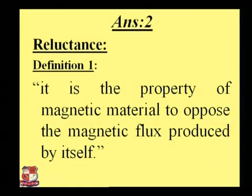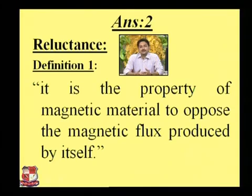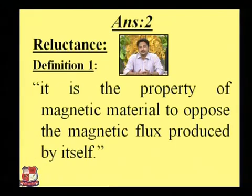Now moving to the next question about reluctance. Reluctance is a term related to the magnetic field. It is the property of a magnetic material to oppose the magnetic flux produced by itself. The magnetic material has the capacity to produce magnetic flux due to itself, or whenever current passes through it, or energy is excited from an externally applied electric field. The property of that particular material to oppose its own magnetic flux is known as reluctance.